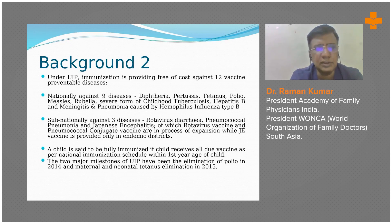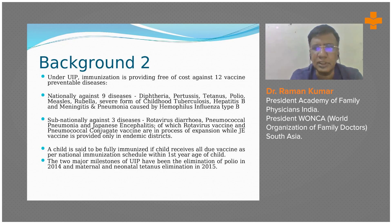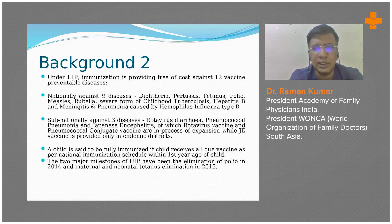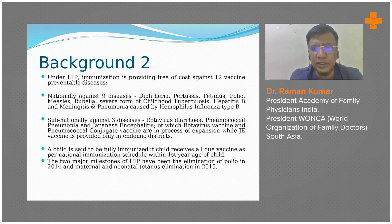These are the 9 diseases included in the Universal Immunization Program by the Government of India, implemented across state governments. Sub-nationally, because many diseases are endemic — for example, Japanese encephalitis is endemic in parts of UP and Bihar and a few other parts of India — three more diseases are covered: rotavirus diarrhea, pneumococcal pneumonia, and Japanese encephalitis. Among these, rotavirus and pneumococcal conjugate vaccine are in the process of expansion, while Japanese encephalitis vaccine is provided only in the endemic districts of UP and Bihar.